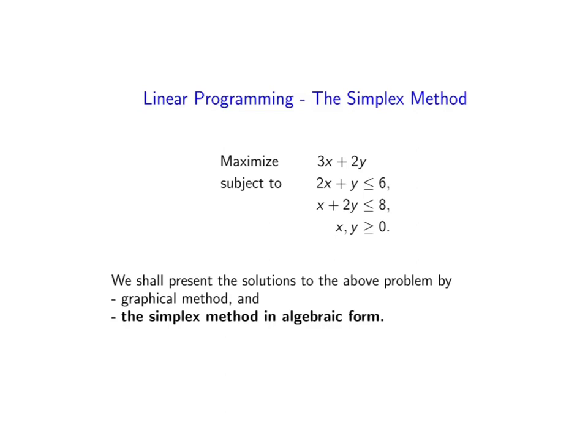Welcome. In this video we shall introduce the simplest method for solving linear programming problems. Our target is to solve the following LP problem: to maximize 3x plus 2y subject to the constraints 2x plus y is less than or equal to 6, x plus 2y is less than or equal to 8, and both x and y are non-negative. We will present the solution by the graphical method and the simplest method in algebraic form.